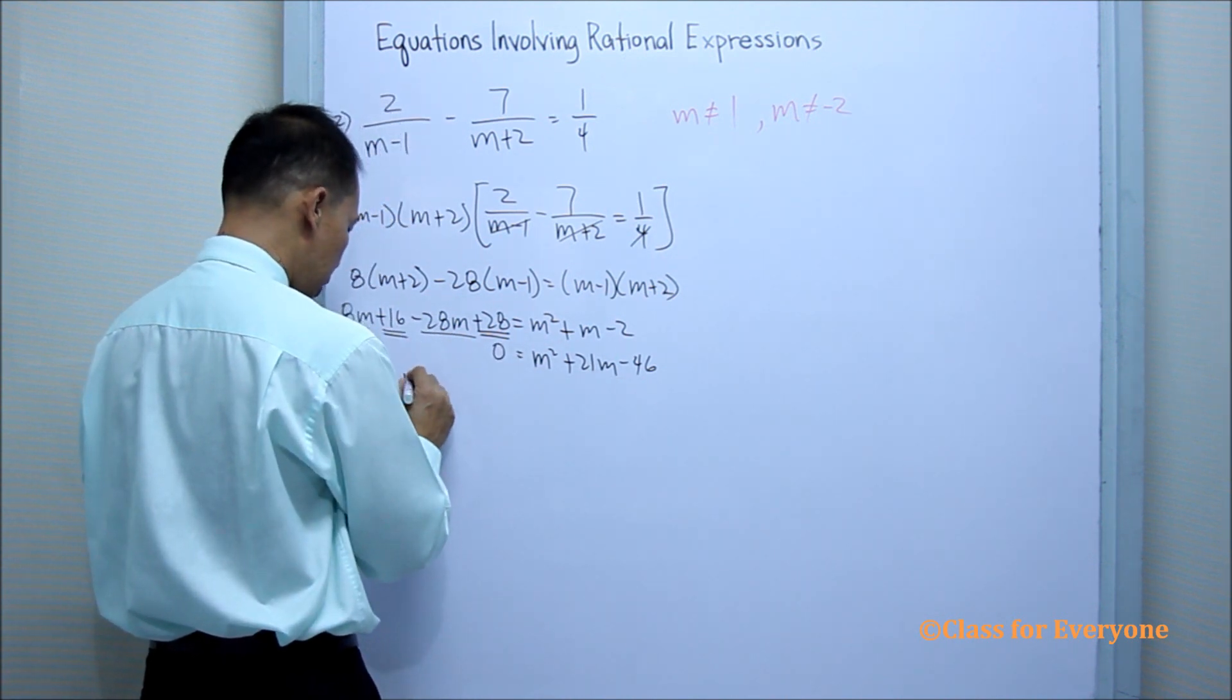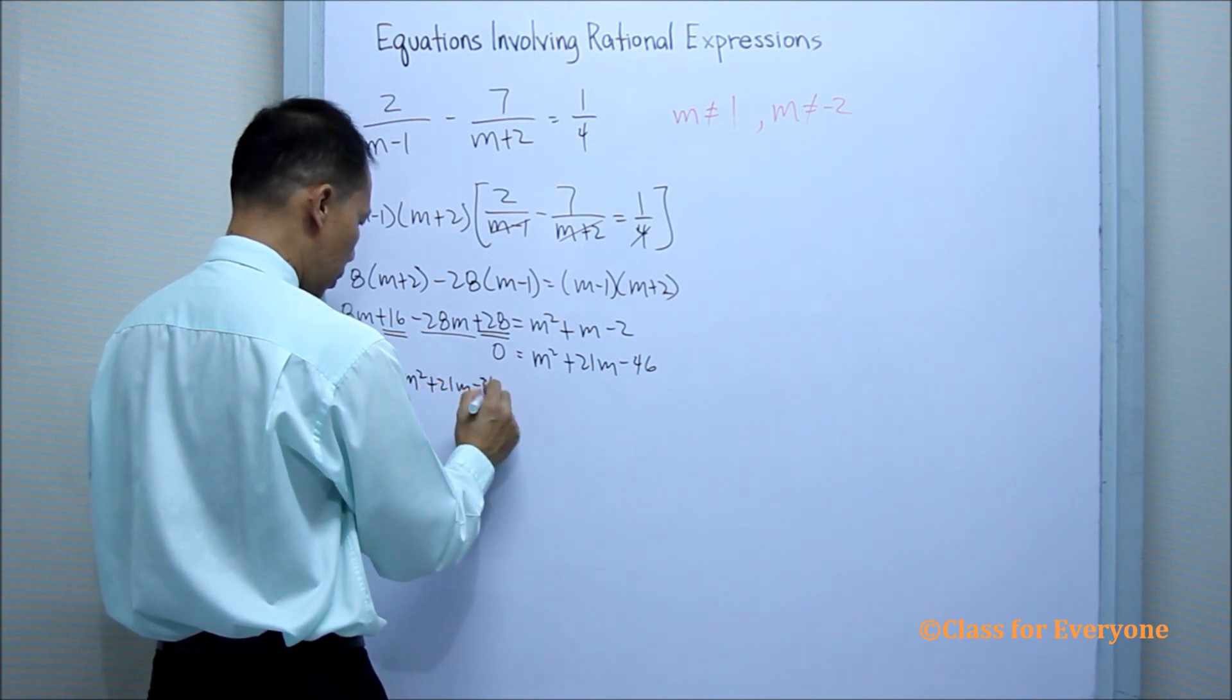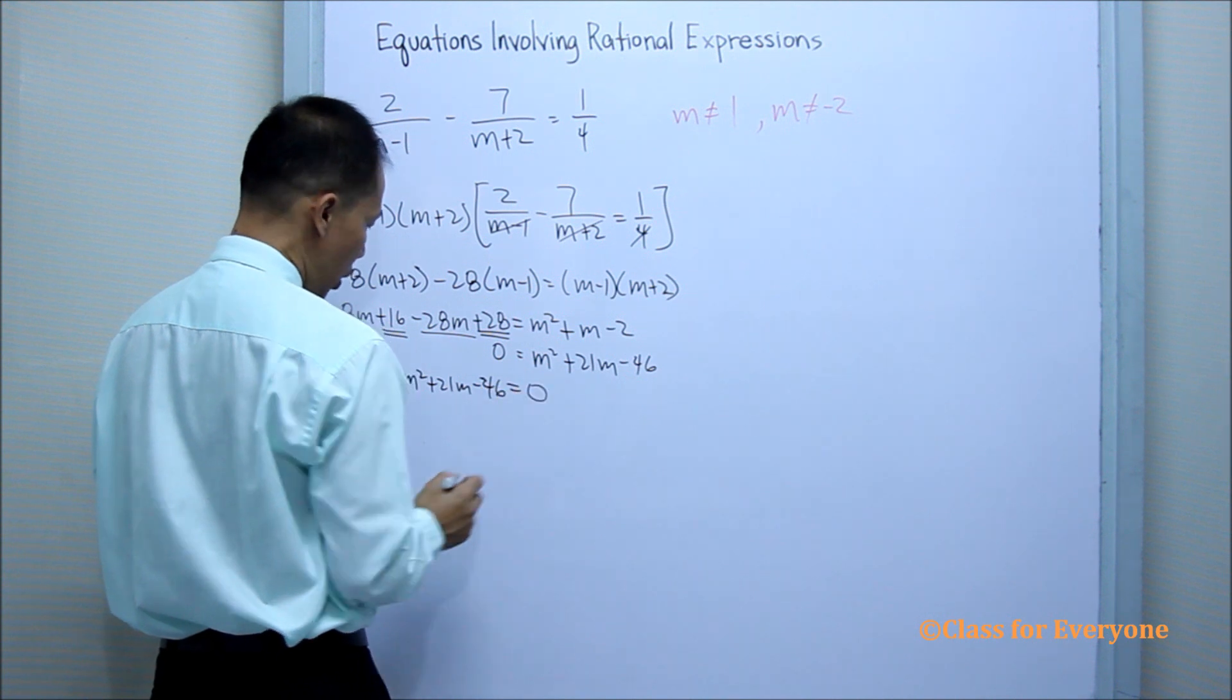By symmetric property, m squared plus 21 m minus 46 equals 0.